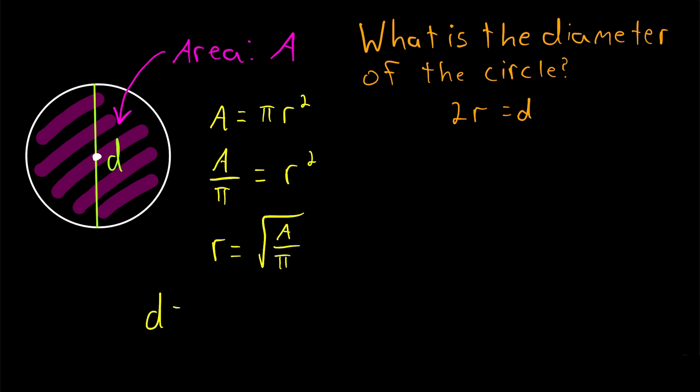So to find the diameter of the circle, which is equal to 2 times the radius, we just have to double this quantity. So double it, multiply it by 2, that gives us 2 times the square root of the area divided by pi.